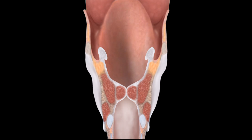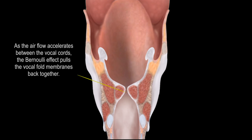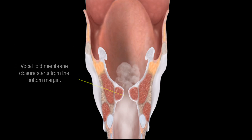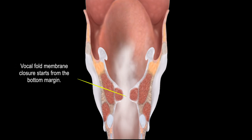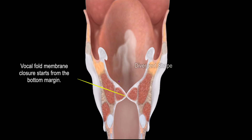As airflow flows, it accelerates as it passes through the glottis, resulting in a pressure drop due to the Bernoulli effect. This pressure drop causes the vocal fold covers to be pulled back together. As the lower edges of the vocal fold covers come back together, the upper margins are still apart in a divergent shape.